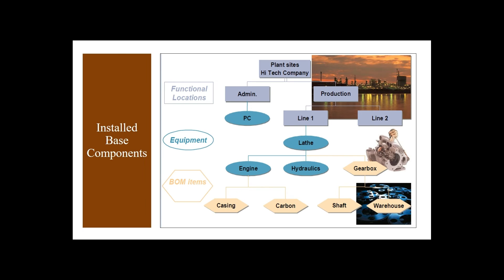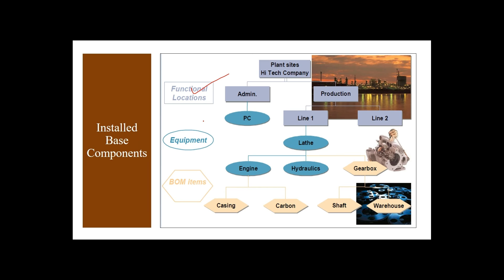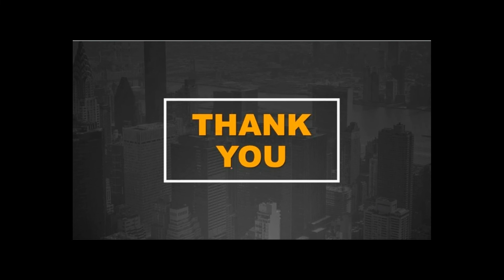If you see here — let's say I am selling my products to a high-tech company. I want to know where my equipments are located. First you put functional location, department here — admin, production. Under that you have the equipment. Or even in production there are two lines, and under each line you have equipments. Under these equipments, if you have some BOM, those BOM components also you can put in the installed base. So the installed base components can be functional locations, equipment, BOM items, and even documents.